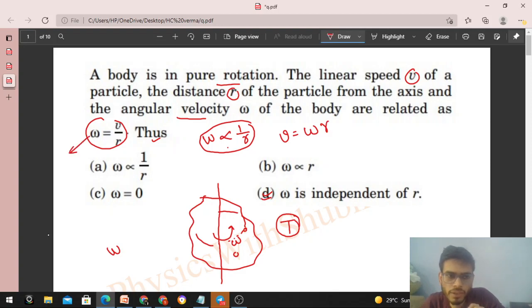As you increase r, the distance of the particle from the axis increases, so its velocity also increases. Omega is constant, so v is directly proportional to r. The linear velocity of the particle increases with r because omega is constant.